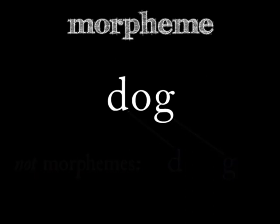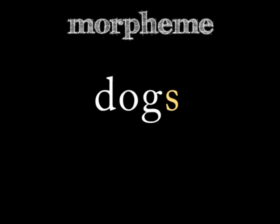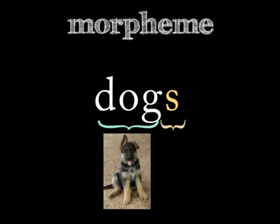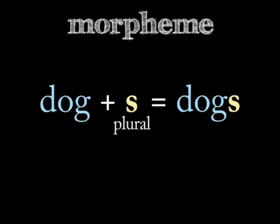The word 'dogs' in the plural — more than one dog — has two morphemes. It has the morpheme 'dog' and it has an 's' sound or a 'z' sound that tells you it's the plural. The morpheme 'dog' and the morpheme 'plural' together make the word 'dogs', which has two morphemes.